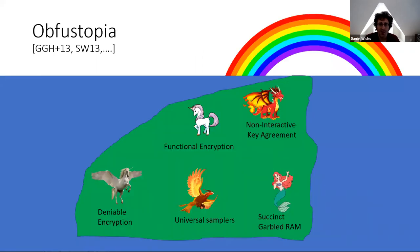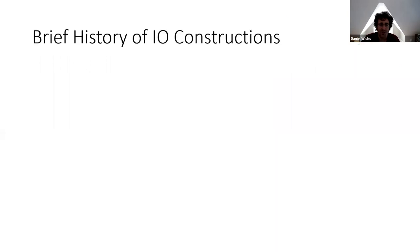The obfuscation of P1 is computationally indistinguishable from the obfuscation of P2. A long series of works have shown that if you have IO, you can use it to construct a large number of really magical cryptographic primitives that we don't know how to construct in any other way — things like non-interactive key agreement, functional encryption, succinct garbled RAM, and so on. So the big question is: how do we construct IO?